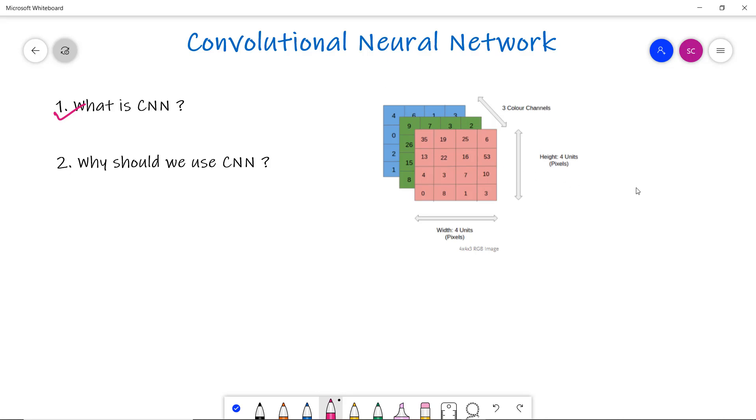Here you can see these three color channels representing the color code RGB—red, green, and blue. Similarly, the width and height give the image size, like 4×4×3. This is how a computer sees an image, representing the color channels.